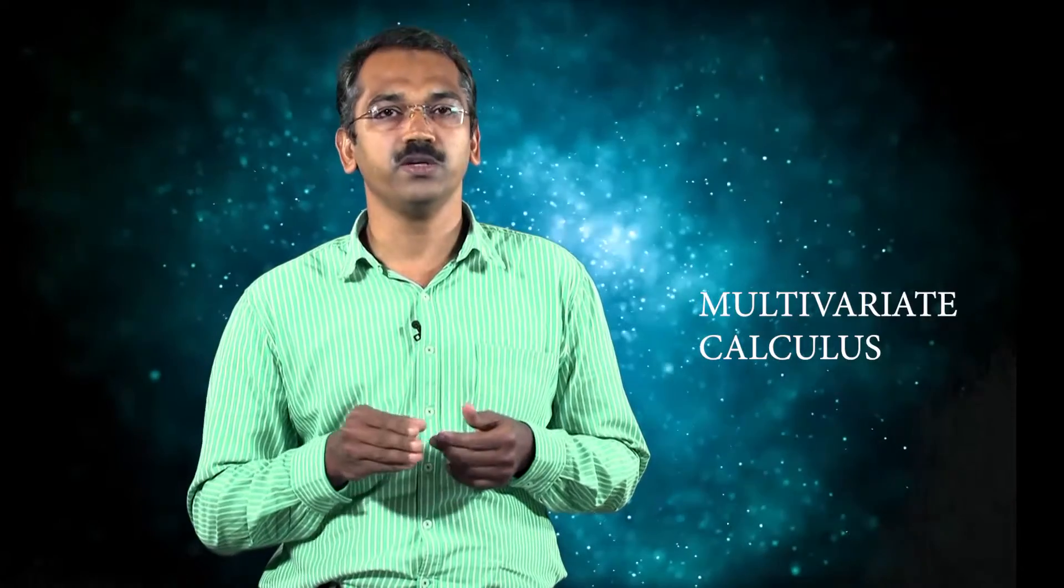If four variables w, x, y, and z are so related that the value of w depends upon the values of x, y, and z, then w is called a function of three variables x, y, and z, and this is denoted by w equals f of x comma y comma z. For example, the volume of a rectangular box having length l, width w, and height h can be determined by the formula v equals l into w into h, which is a function of three variables. The variables are length, width, and height.